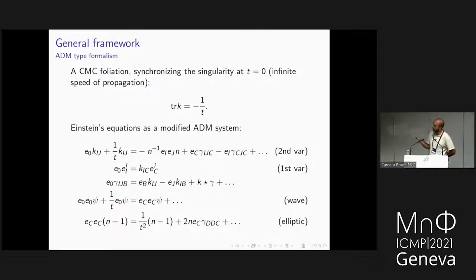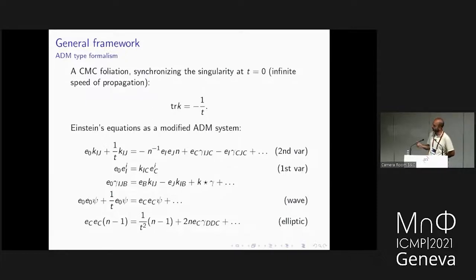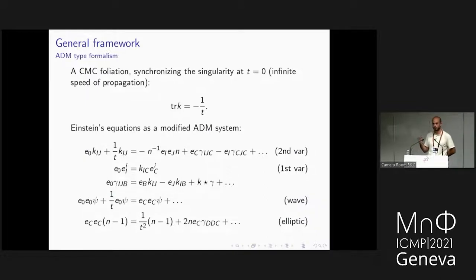Now we have the Einstein equations in this framework. We have the second variation equations for the components of the second fundamental form, where the right-hand side contains first derivatives of the spatial connection coefficients coming from the spatial Ricci curvature, and also the Hessian of the lapse. We also have the first variation equation, which is an ODE in the frame coefficients, and a PDE evolution equation for the spatial connection coefficients. There is also the wave equation for the scalar field when studying the Einstein scalar field system. The most important aspect is estimating the geometric variables K and gamma, since these connection coefficients satisfy a first-order PDE with spatial derivatives on the right-hand side.